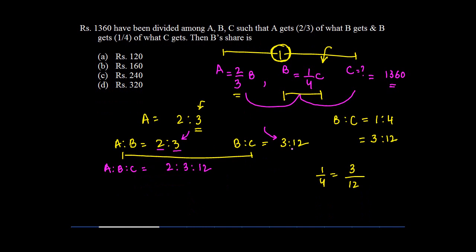Which is 2, 3 and 12. Now if you know that the ratio of these 3 is equal to 2:3:12, and the total money that they get is 1360, how much is B's share?